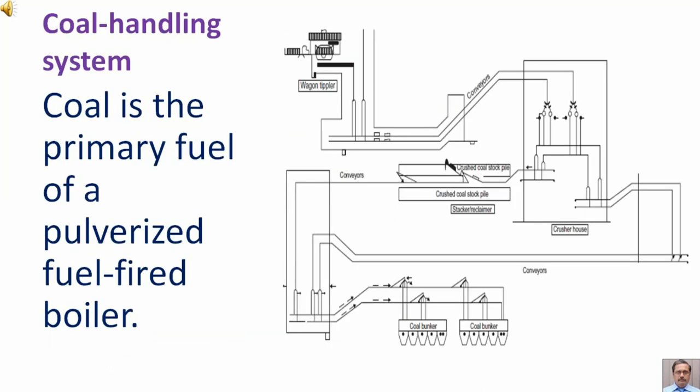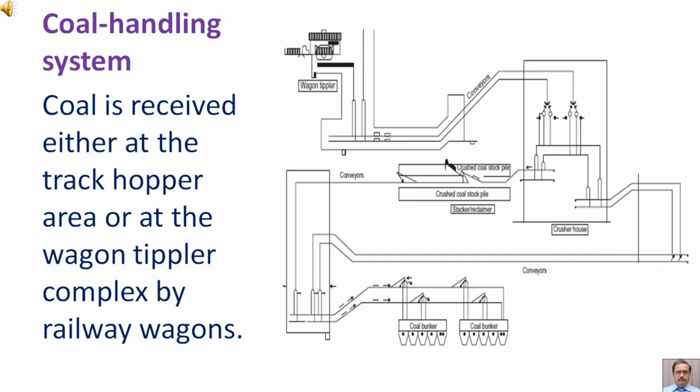Coal is the primary fuel of a pulverized fuel fired boiler. Coal is received either at the track hopper area or at the wagon tipler complex by railway wagons.